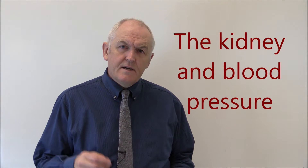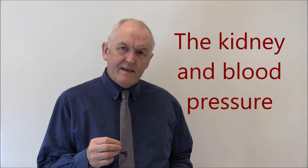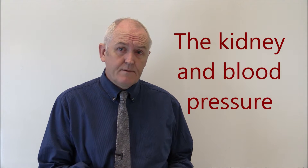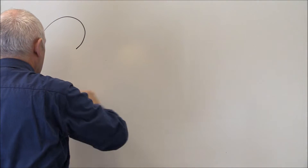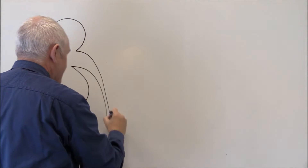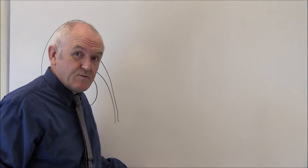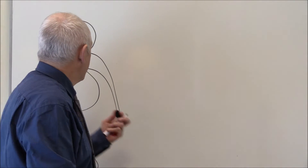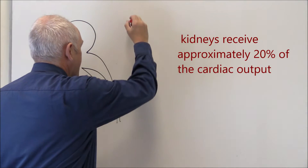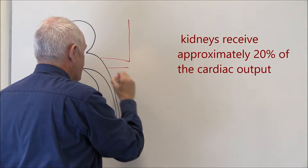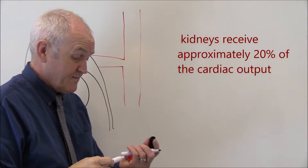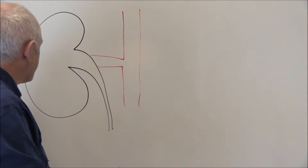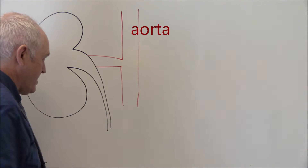One of the functions of the kidney is that it regulates systemic blood pressure. Here we have a kidney, and it's essential that the kidney is well perfused with blood. As you probably know, we have the aorta and the renal artery is a branch from the aorta, and the kidney needs to make sure it's well perfused with blood.